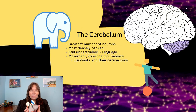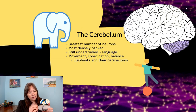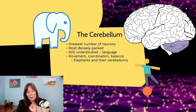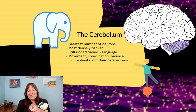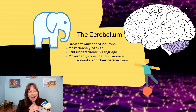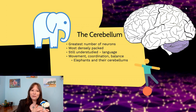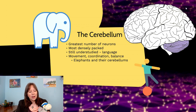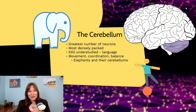Then we have the cerebellum. On the model you can see it has tight little grooves — different from the sulci and gyri of the cerebrum. Note that the top part is the cerebrum and the back lower part is the cerebellum; they have similar-sounding names. The cerebellum is almost considered the 'little brain,' but it actually has the greatest number of neurons, most densely packed, which is why its texture looks different.